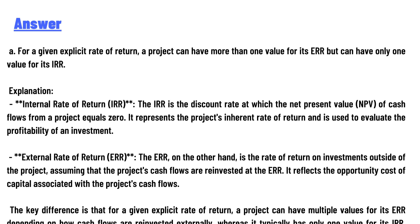The correct answer is A: for a given explicit rate of return, a project can have more than one value for its ERR but can have only one value for its IRR. Explanation: the internal rate of return (IRR) is the discount rate at which the net present value (NPV) of cash flows from a project equals zero. It represents the project's inherent rate of return and is used to evaluate the profitability of an investment.